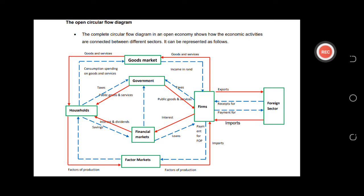The household also interacts with government — we pay tax to government and government delivers goods to us. Government also interacts with firms: firms pay tax to government, and companies that make a profit pay that tax to the government. Government also provides services to the firm.